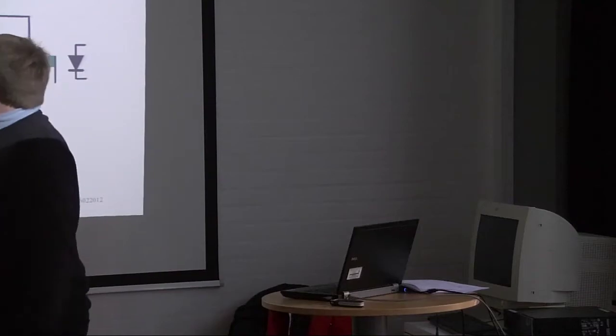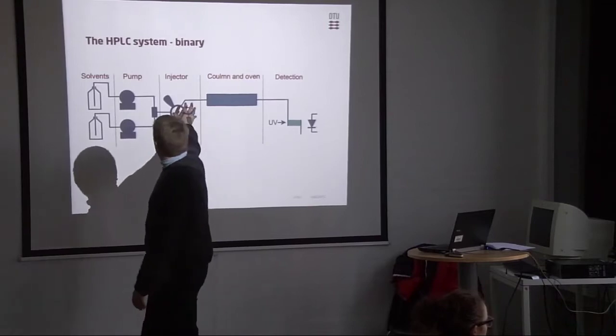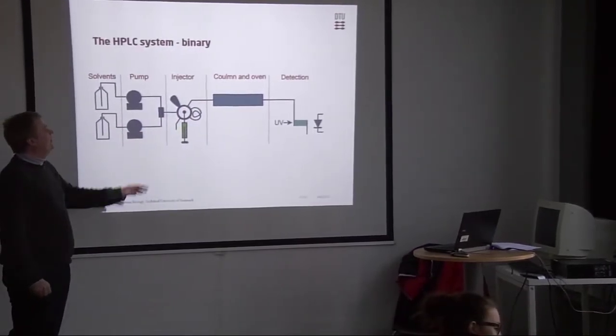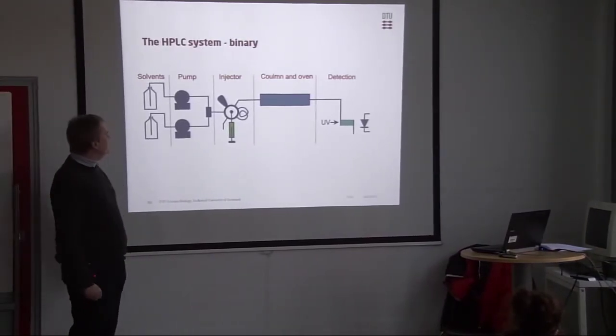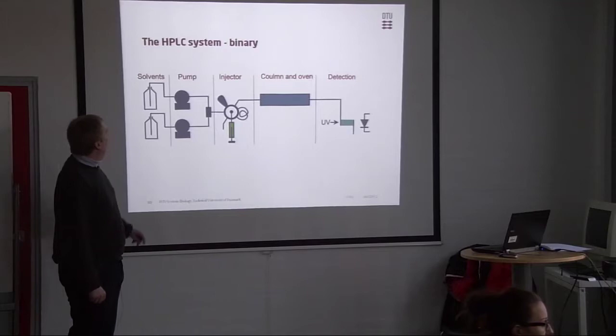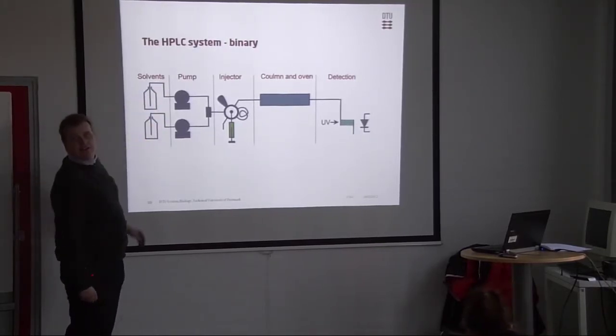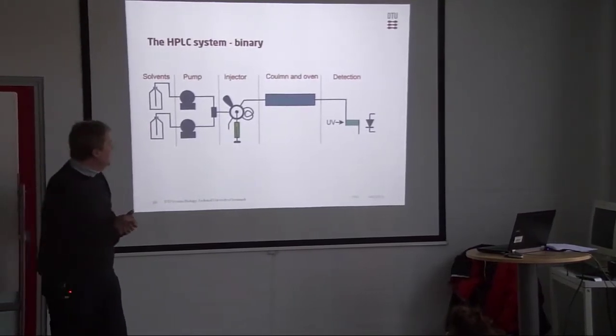This is also why we need to filter the samples, because it also kind of clog up all these tubings. So the heart, the column, sits in a thermostat, so we know exactly which temperature it has. We have to inject our sample, and we have our pumps and our solvents, and then we have to go to our detector. This is more or less an HPLC system. And if you want to add a little more, you could say we actually have a degasser here, or we have to degas our solvents.